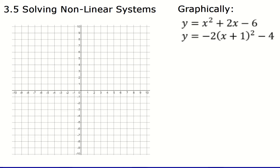Here in this first example I've got two parabolas. Y equals X squared plus 2X minus 6, and Y equals negative 2 times quantity X plus 1 squared minus 4. The first equation is perhaps a little bit harder to get graphed because I don't know where the vertex is. So I'm going to complete the square in order to find the vertex.